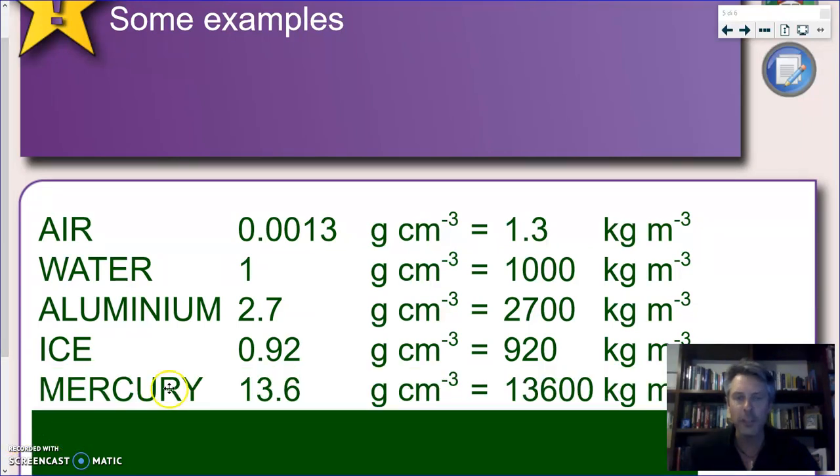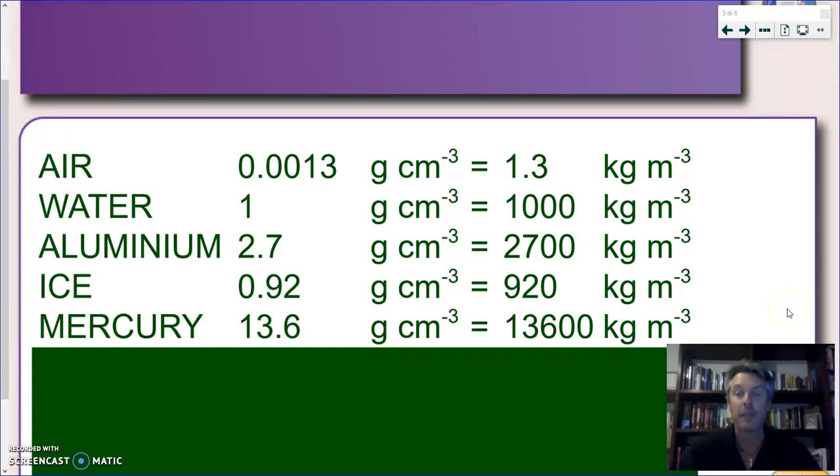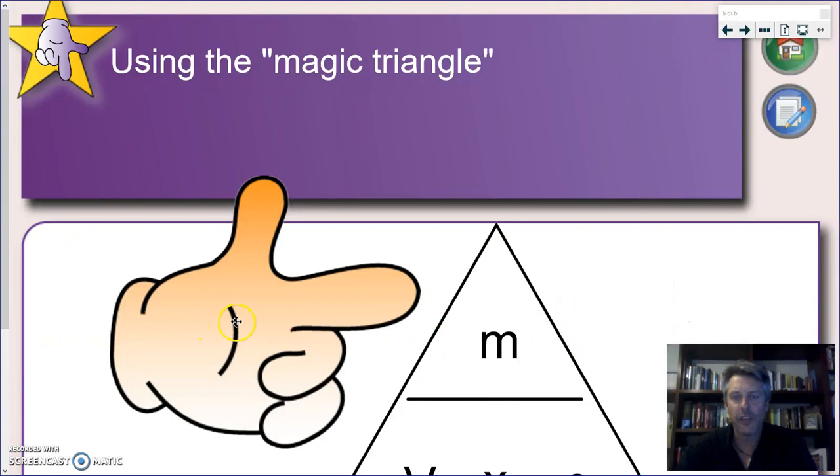And finally, we have something that completely breaks our pattern. Mercury. Mercury is a metal, right? But it's a liquid. And incredible. It's one of the densest materials you can find on Earth. 13.6 grams per cubic centimeters. That means a cubic meter of Mercury, which by the way is extremely toxic, so better not to have it around, has a mass of 13,600 kilograms.